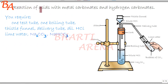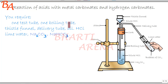Next, we are going to see the reaction of acids with metal carbonates and metal hydrogen carbonates. For this activity, you require one test tube, one boiling tube, a thistle funnel, a delivery tube, dilute hydrochloric acid, lime water, sodium carbonate, and sodium hydrogen carbonate.